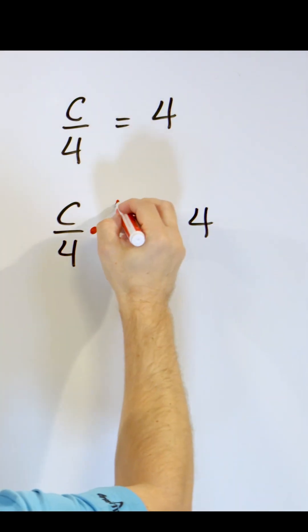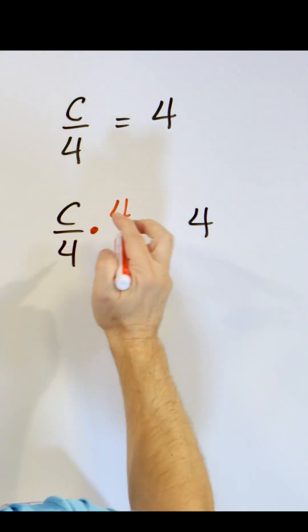Instead of dividing by 4, we multiply by 4. But don't forget that when we multiply by 4, since we have a fraction here, it's going to be easier to think of it as 4 over 1, right?